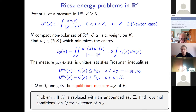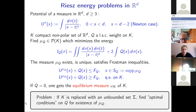Such a minimizing measure satisfies variational conditions called the Frostman inequalities, which give conditions on K and on the support of the measure. When there is no weight, one speaks about the equilibrium measure of the compact set K. When K is a compact non-polar set, there is always a solution which is unique and gives the measure with minimal energy.